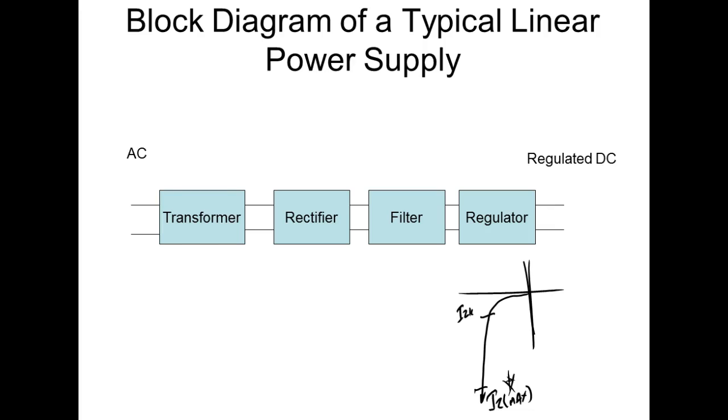What's the three things that we need to know about the zener when we buy it? We need to know VZ, and we need to know PZ, and then the third thing would be the tolerance. So I know VZ and I know PZ, and I know power is equal to V times I. So if I rearrange that formula, I got I is equal to P over V.